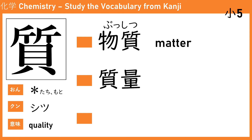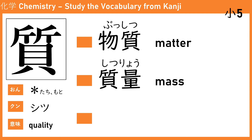The next word is 質量 (shitsu-ryo). 質 means quality, 量 means quantity, so 質量 means mass — how many kilograms, how many pounds. That is mass.